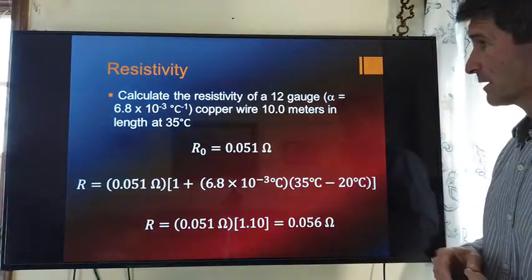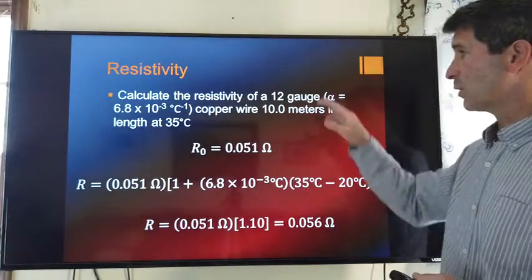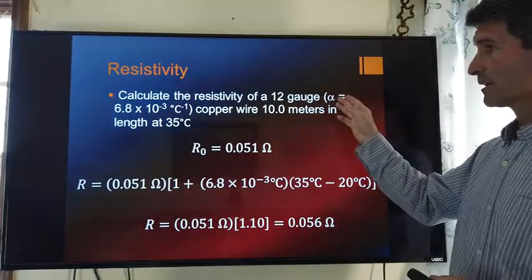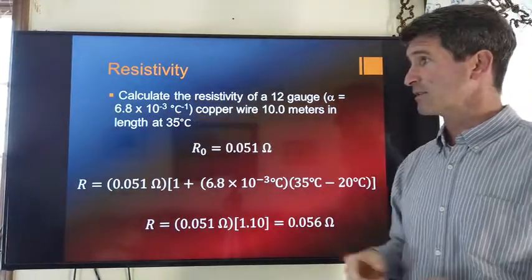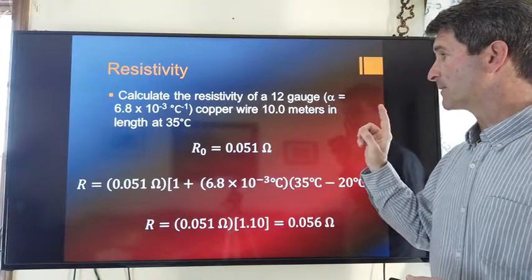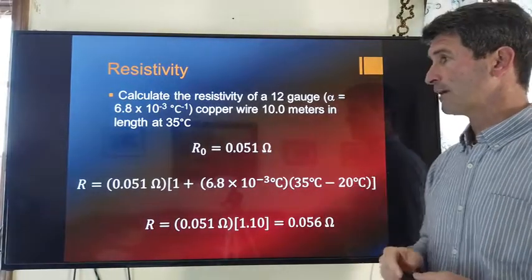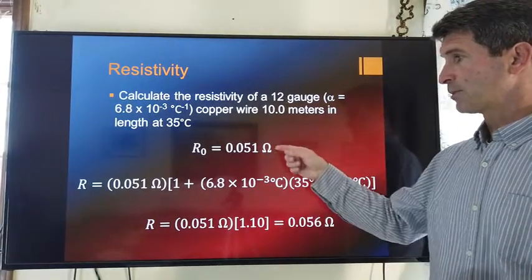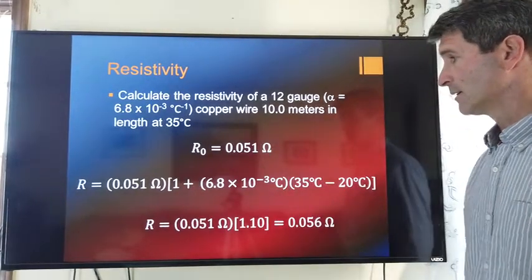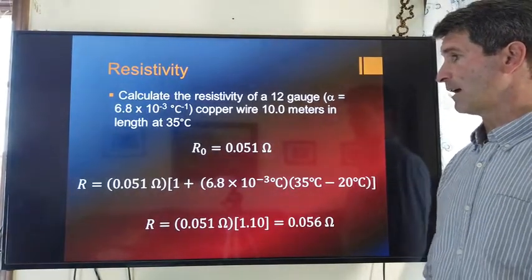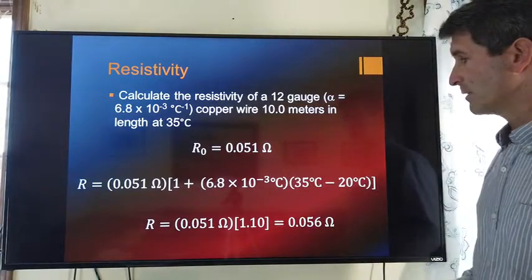In this particular case, we want to calculate the resistivity of 12 gauge wire. That's copper. Now, this is not the resistivity of copper. This is actually the temperature coefficient. It's 10 meters in length at 35 degrees Celsius. Now, previously, we saw at 20 degrees Celsius, our copper wire is going to have a resistance of 0.051 ohms.